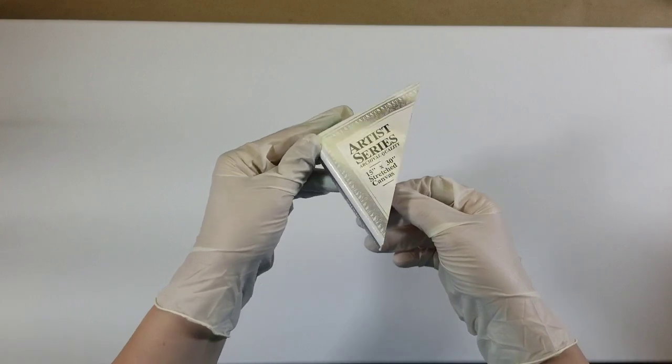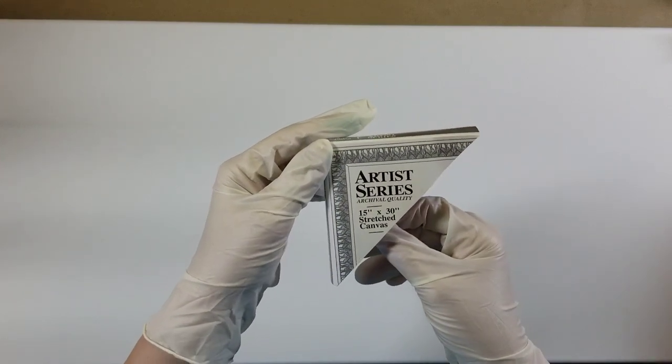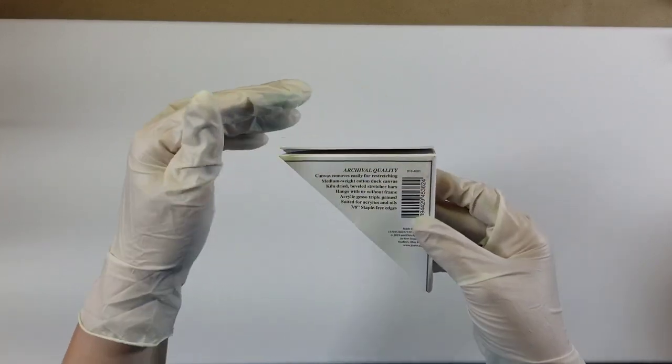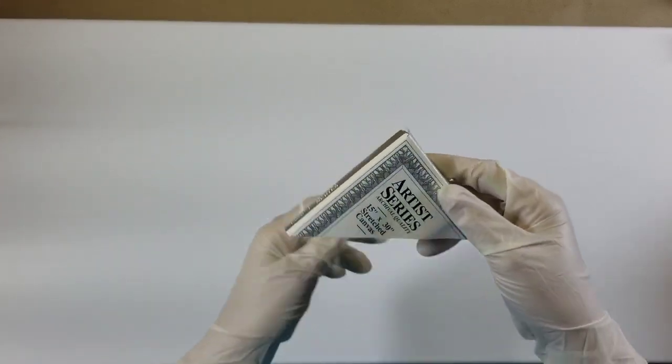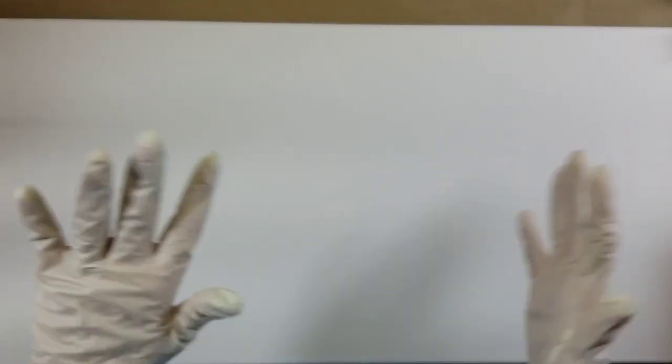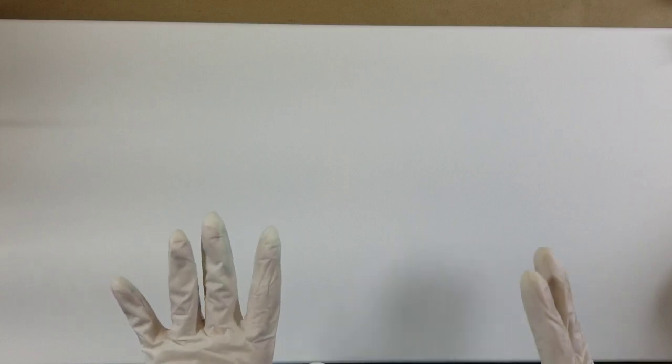This is the Artist Series Archival Quality 15 by 30 stretch canvas from Joanne's. Tonight we're going to do an all green color palette. I did an all blue color palette and I loved that piece, so let's do an all green.